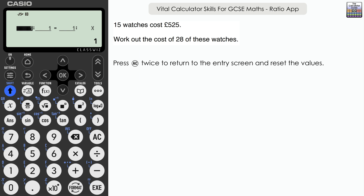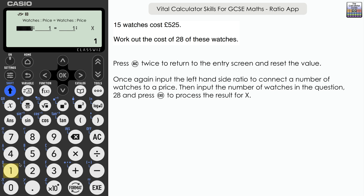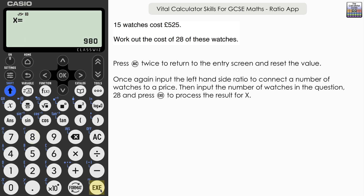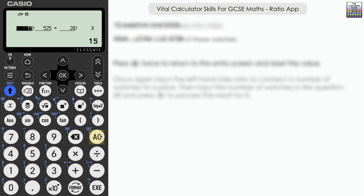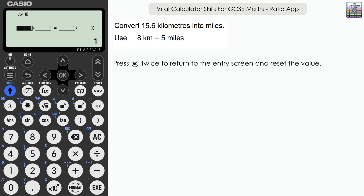The next question: 15 watches cost £525 — work out the cost of 28 of these watches. The ratio as set up is perfect for this. We'll have watches on the left-hand side and price on the right-hand side: 15 in the first cell, £525. Execute to scroll across, input 28, Execute, then Execute again. 28 watches will cost £980. A very good example of how simple and straightforward this can be. Press AC twice to reset.